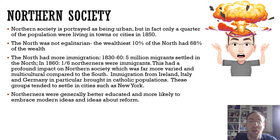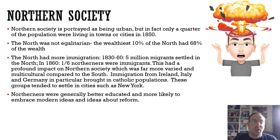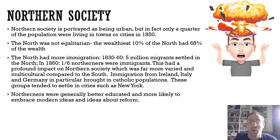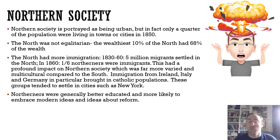One of the things that made northern society very different from the south was immigration. Between 1813 and 1860, there were 5 million migrants that settled in the northern states. In 1860, about one in six northerners were immigrants. This had a profound impact on northern society — it was far more varied and multicultural compared to the south. Immigration from Ireland, Italy and Germany in particular brought large Catholic populations into northern cities, giving places like New York quite a unique character. America is often referred to as the melting pot, and that was far more true of the north.